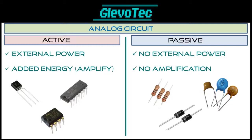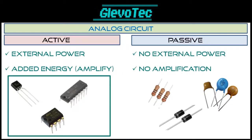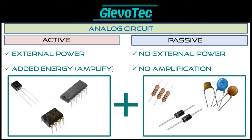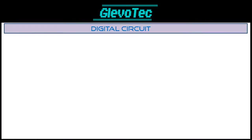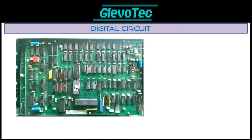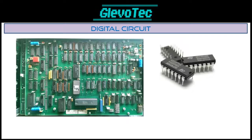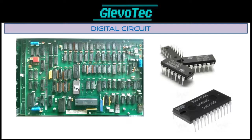An analog circuit is a combination of passive and active components. You can say we use passive components to alter a signal and then run it through one or more active components, and so on. A digital circuit uses a totally different approach. There was a time where digital circuits were built similar to analog circuits, with separate components.